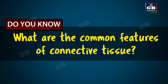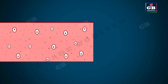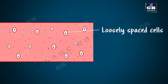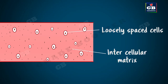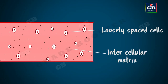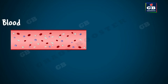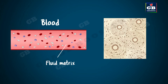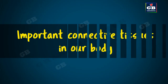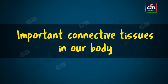What are the common features of connective tissue? The cells of the connective tissue are loosely spaced. They are embedded in an intercellular matrix. The matrix of blood is like a fluid whereas the matrix of bone is very hard. Now let us study some important connective tissues in our body.